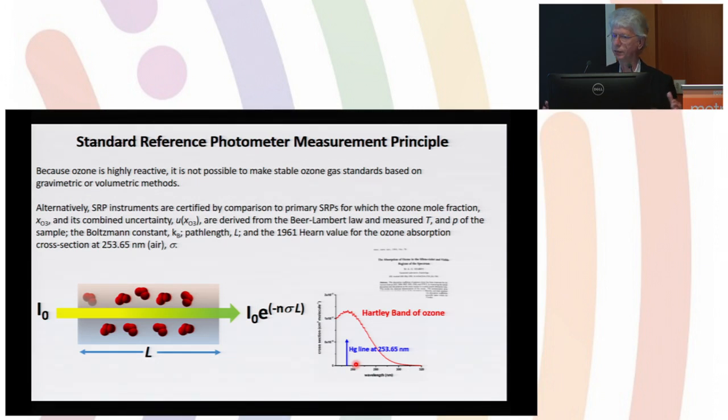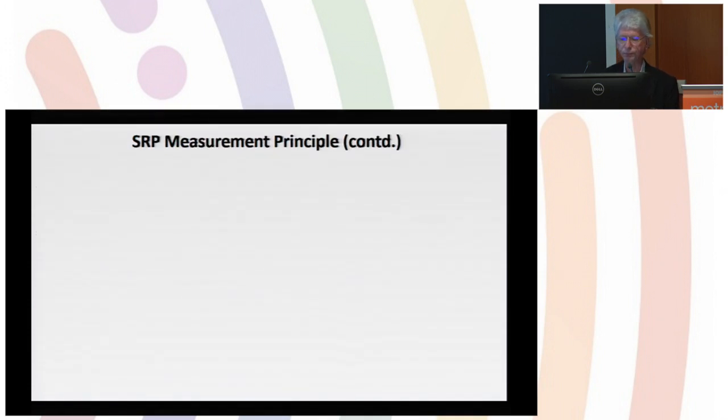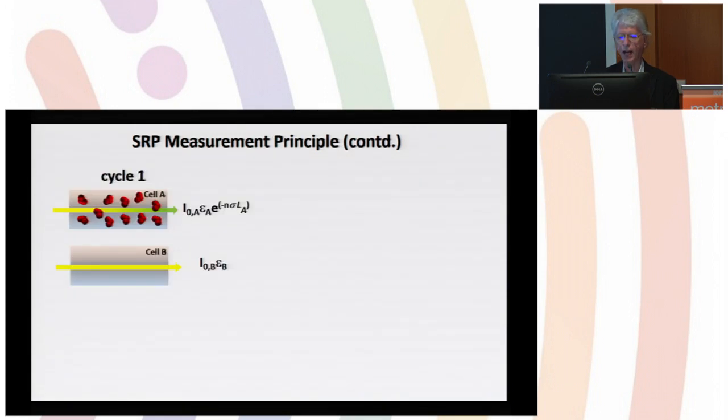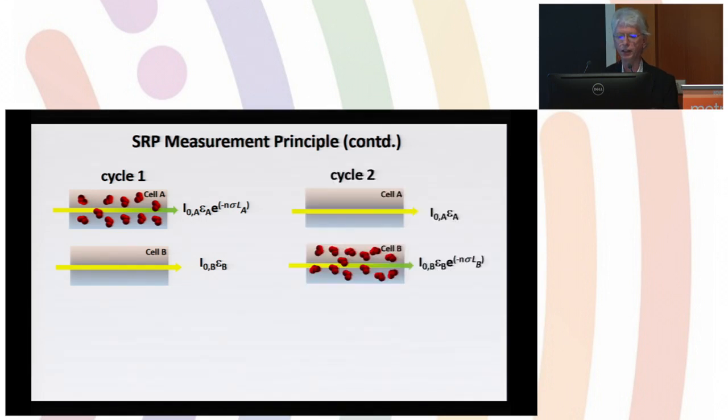By coincidence, the mercury line is near the center of this band in the UV. These instruments operate on very simple principles: single pass absorption through about an 80 centimeter path length. It boils down to knowing the cross section, which we call sigma here.